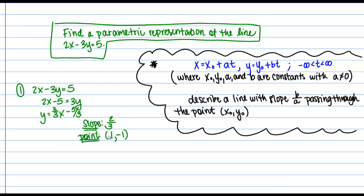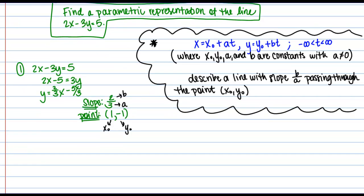Now we're just going to take this information and plug it into the parametric form of the line. In this parametric form, the slope of the line is b over a, and my slope should be 2/3. So I can let b equal 2 and a equal 3. Then x0 is 1 and y0 is negative 1. Plugging in all that information, I get x equals 1 plus 3t and y equals negative 1 plus 2t, with t going between negative infinity and infinity to trace out the entire line.